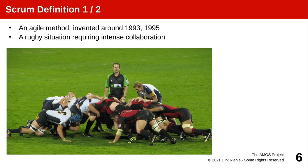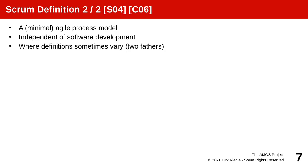Scrum is the process we follow. It is one of the earliest Agile methods, defined by Schwaber and Sutherland in 1993 and 1995. The original term comes from rugby — a huddle where people are intimately interacting with each other. In software development it is a minimal agile process model, and that is one reason why it won in the marketplace — it is comparatively simple.